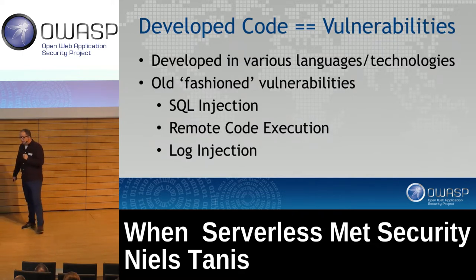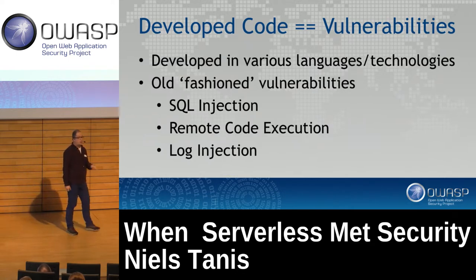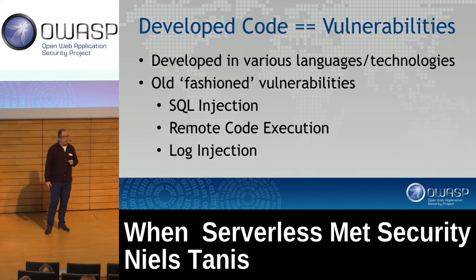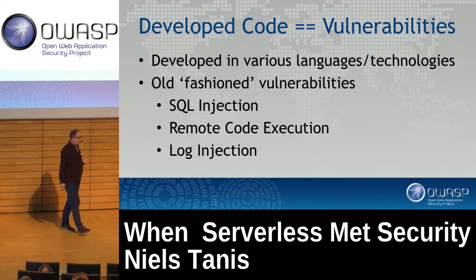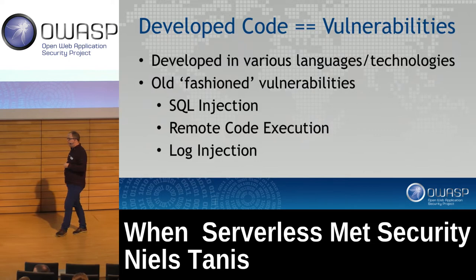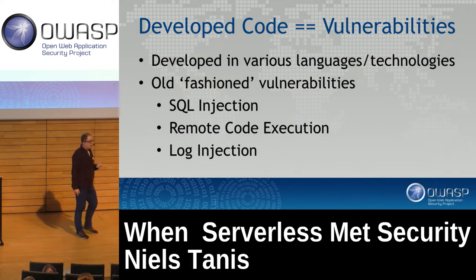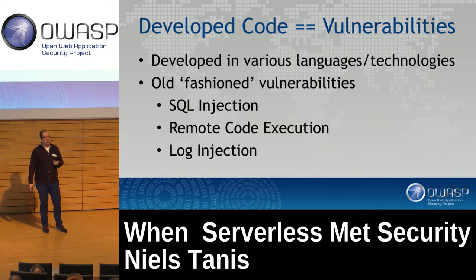Now we end up at the point where OWASP is all about. Talked a lot about platforms, queues, and so on — but there's still a piece of code being developed, which is the function. Looking at AWS and Azure Functions, a variety of technologies can be used. There's still input coming from a source — a queue, an HTTP request from an API gateway. We still need to make sure we do the right things with sanitization of data and avoid dynamic SQL. That still counts.